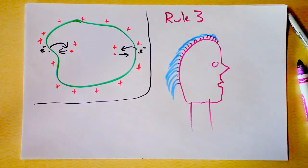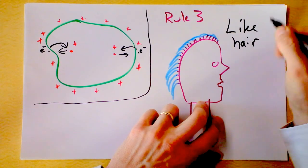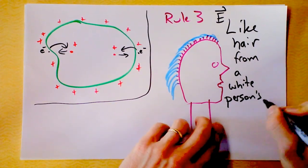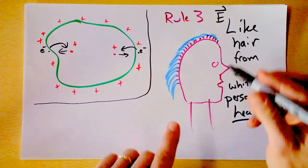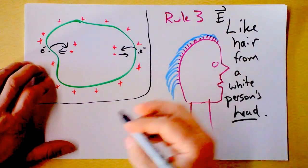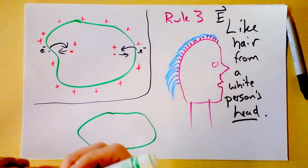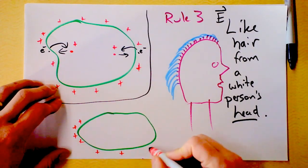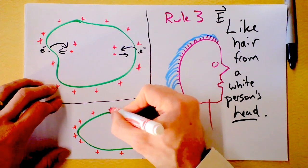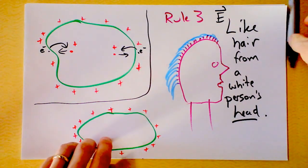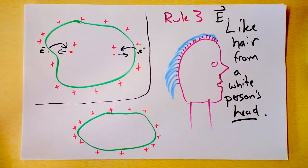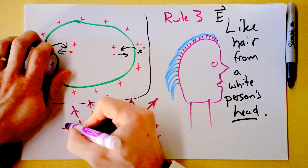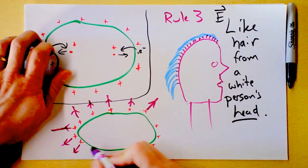Electric fields around conductors are just like that. The electric field right next to a conductor is always normal to the surface. All charge resides on the outside of the conductor, and the electric field goes directly out — here, and there, and there — pointing directly outward at all times.